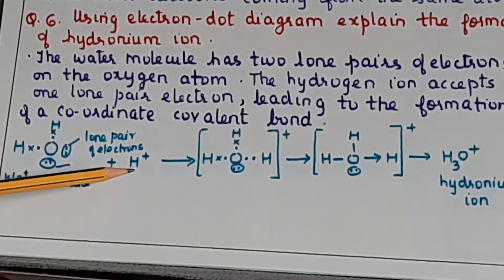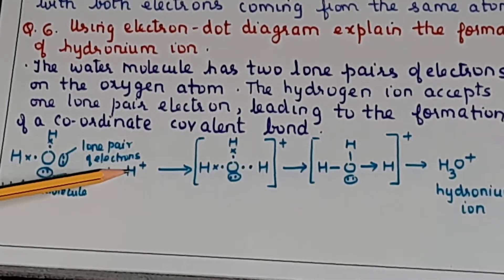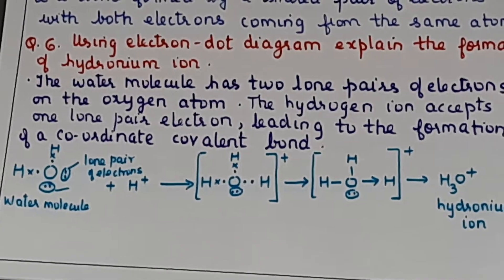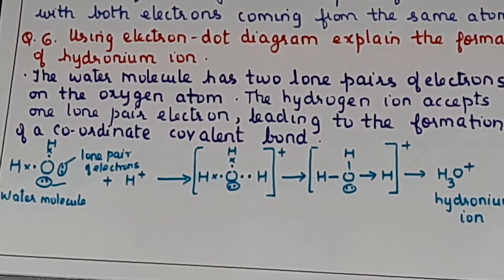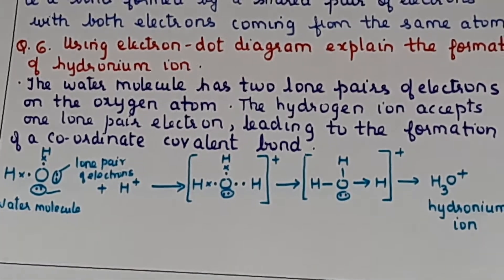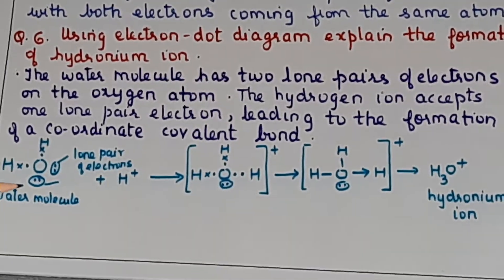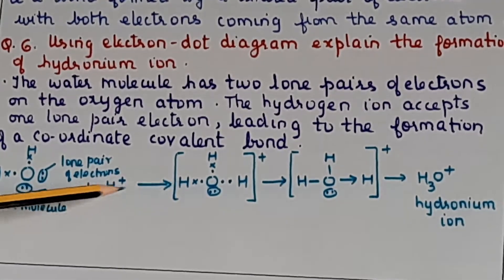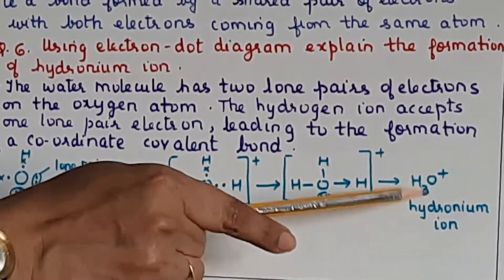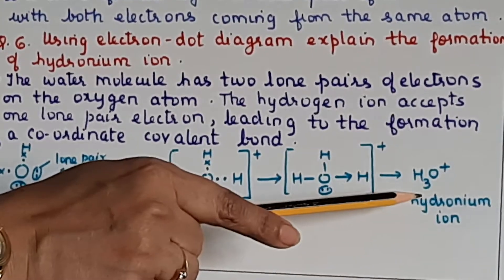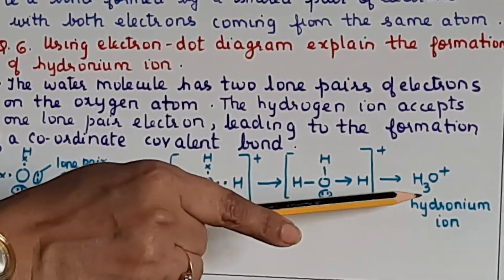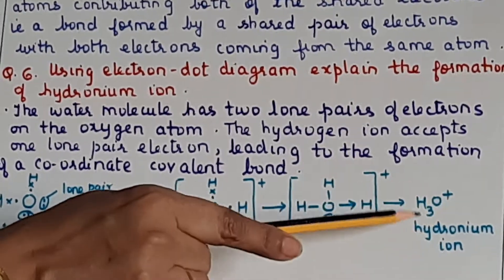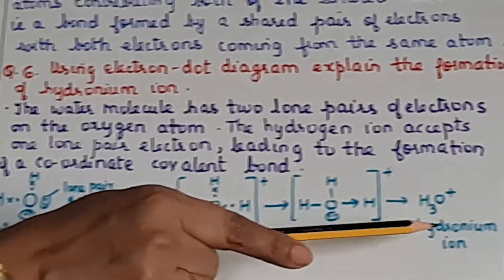The H+ ion comes from the dissociation of the acid. Whenever you add an acid like HCl to water, it forms H+ and Cl–, and the H+ hydrogen ion combines with the water molecule because it is an aqueous solution of the acid. In the aqueous solution, formation of the hydronium ion takes place. All acids exhibit an acidic character because of the formation of these hydronium ions.